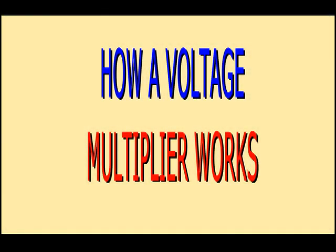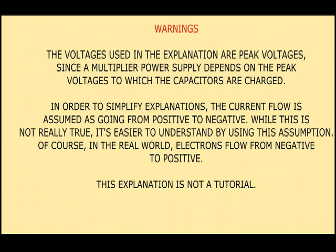How a voltage multiplier works. Warnings. The voltages used in the explanation are peak voltages, since a multiplier power supply depends on the peak voltages to which the capacitors are charged. In order to simplify the explanation, the current flow is assumed as going from positive to negative. While this is not really true, it's easier to understand by using this assumption. Of course, in the real world, electrons flow from negative to positive. This explanation is not a tutorial.